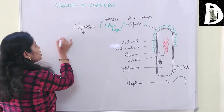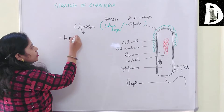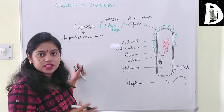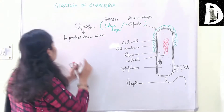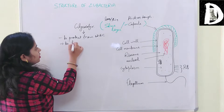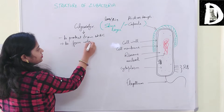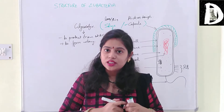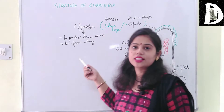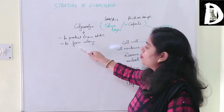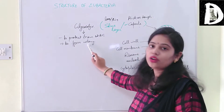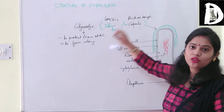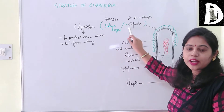The main function of glycocalyx is to protect the bacterial cell from WBC and to help form a colony. The attachment function of glycocalyx also helps in colony formation. So the outermost layer is glycocalyx, which can be either a slime layer or a capsule.